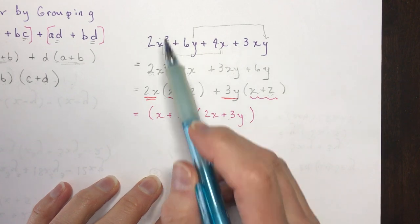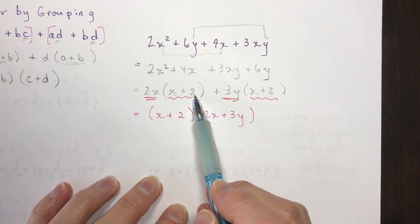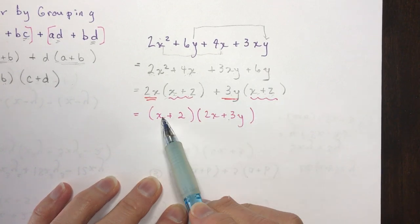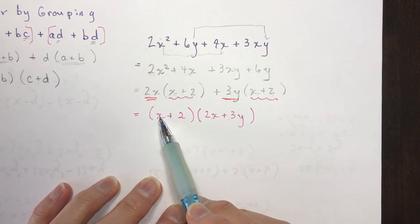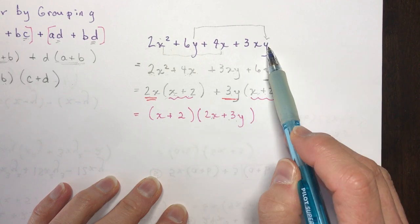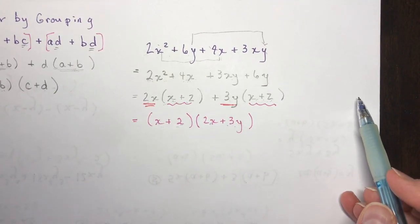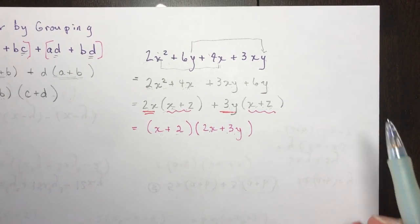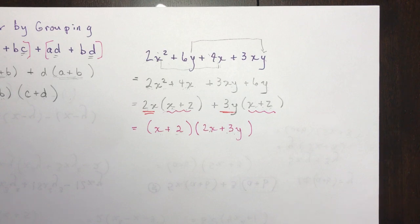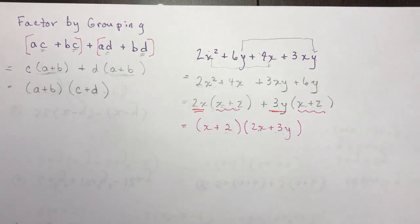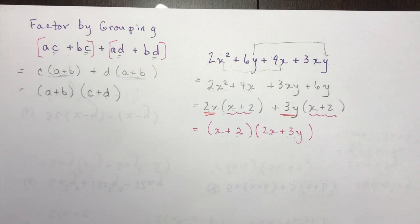You can verify by expanding: x times 2x is 2x squared, x times 3y is 3xy, 2 times 2x is 4x, and 2 times 3y is 6y — which takes us right back to the original question. In the next lesson we'll get into factoring trinomials, which is very important for your work on quadratics. Hope that helped! Give a thumbs up, subscribe, leave comments, and ask questions.